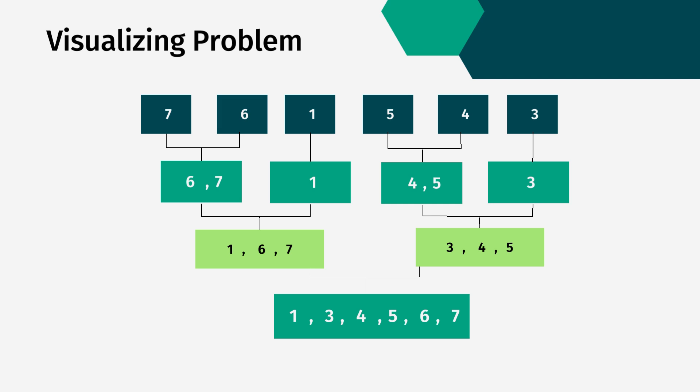Finally, we combine the solutions of the sub-problems to get the answer for the original problem. The result is the sorted array: 1, 3, 4, 5, 6, and 7. This is how the divide and conquer approach works.